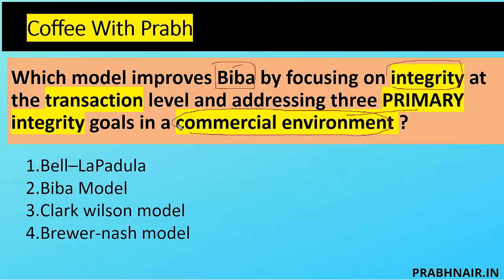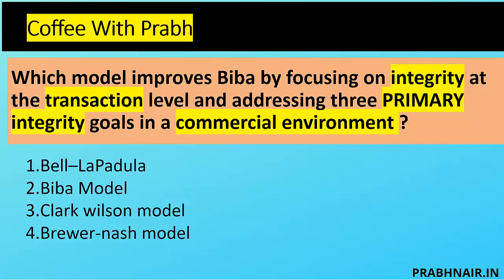Option A, Bell-LaPadula, focuses on confidentiality. Biba basically focuses on integrity. Clark Wilson was introduced to extend the Biba model in a commercial environment for integrity — which is very close. Brewer-Nash is basically the Chinese Wall, which prevents conflict of interest. So going by the statement, Clark Wilson looks like the answer.